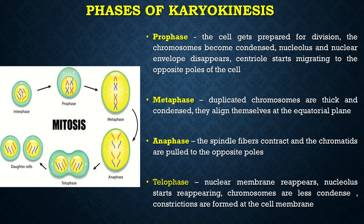Finally, karyokinesis terminates with telophase. Here, the nuclear membrane is again seen to reappear. The nucleolus also starts reappearing and the chromosomes are less condensed. Constrictions are formed at the cell membrane, and these constrictions will deepen and will ultimately lead to cytokinesis and the generation of two daughter cells.